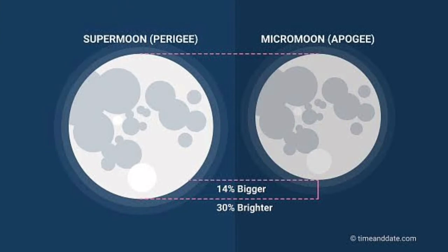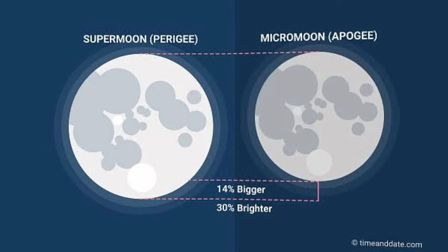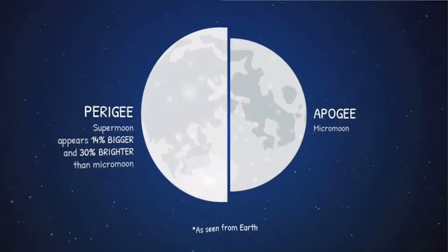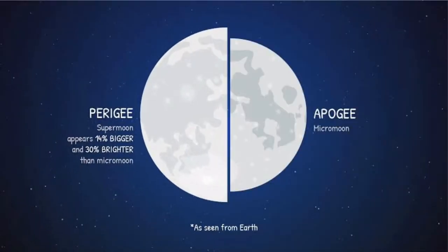A full moon at Perigee can appear 14% larger than usual as viewed from Earth. It can also be 30% brighter than other full moons.